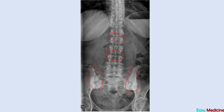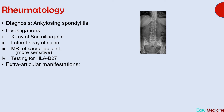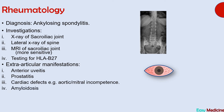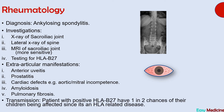HLA-B27 is associated with four diseases: ankylosing spondylitis, psoriatic arthritis, arthritis associated with inflammatory bowel disease, and reactive arthritis. Extra-articular manifestations of ankylosing spondylitis include anterior uveitis (presenting as a red eye), prostatitis, cardiac defects such as aortic or mitral incompetence, amyloidosis, and pulmonary fibrosis. A patient with positive HLA-B27 has a one-in-two chance of their children being affected.